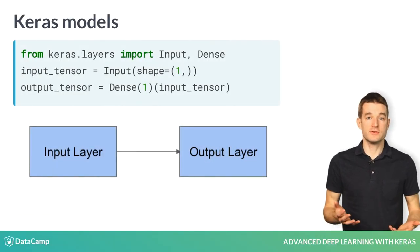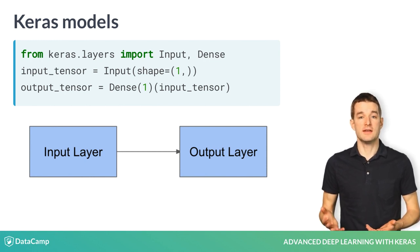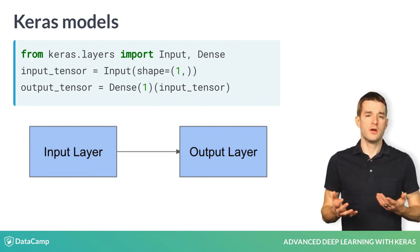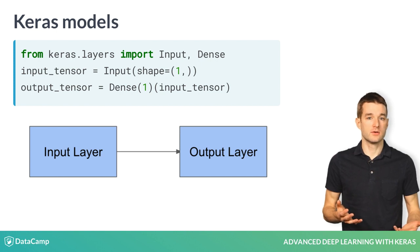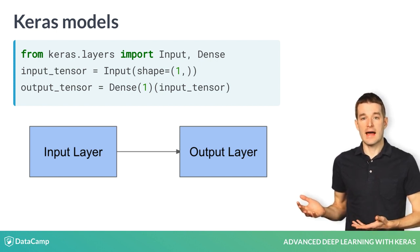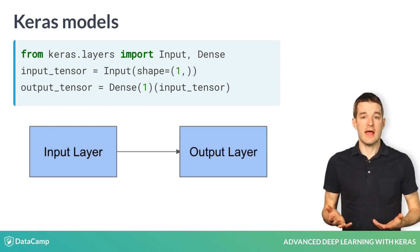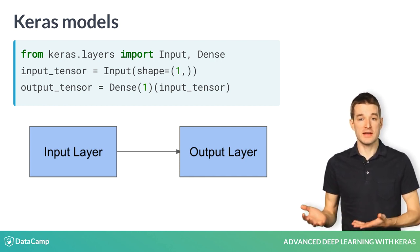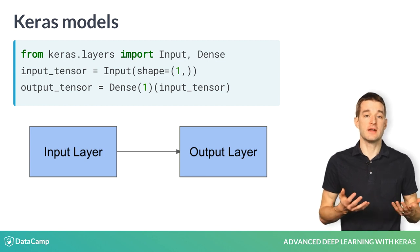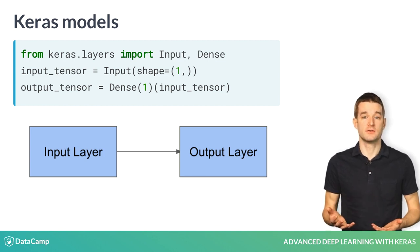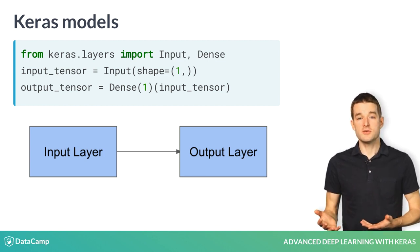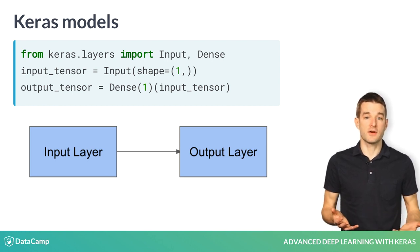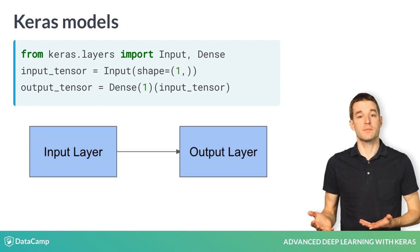I will start with the two simple Keras layers you defined in lesson one. Note that I've taken a shortcut here. Rather than defining the output layer in one line and then the output tensor in the next, I'm using one line to both create the layer function and then call it to produce a tensor. There are two sets of parentheses in that line because we both create the function and then call it in the same line.